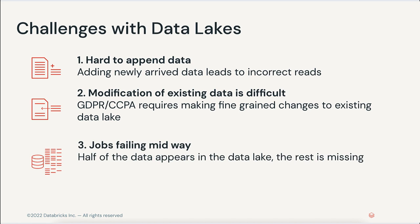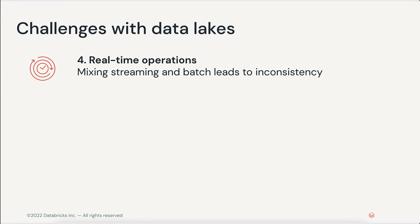Third is the issue of jobs failing midway through. For example, if you have a streaming job with always-on nodes in a cluster, one of those nodes or the whole cluster will go down. Even worse, if the job was failing silently, then months later when you're trying to access data, only half of the data is there. Fourth, organizations have been promised real-time insight about operations, but mixing streaming and batch can easily lead to inconsistency — reading partial results.